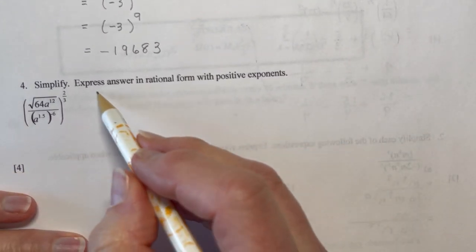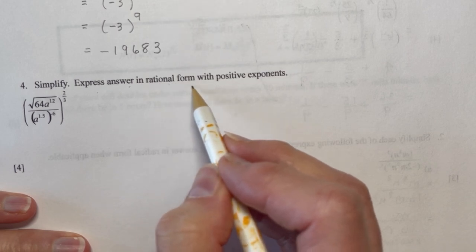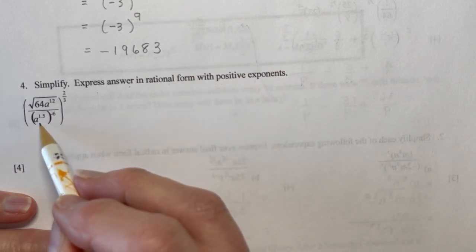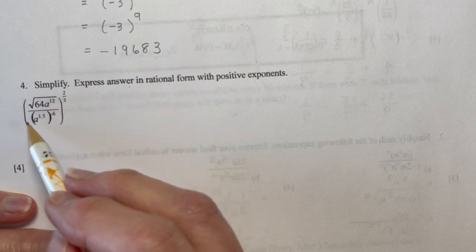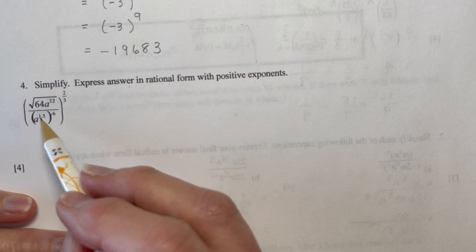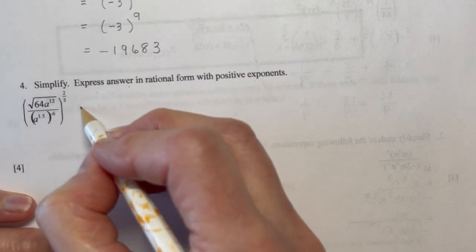Number 4. Simplify. Express the answer in rational form with positive exponents. So the first thing I want to do is get rid of these brackets. I'm going to work my way from the inside out here a bit.